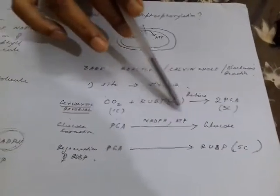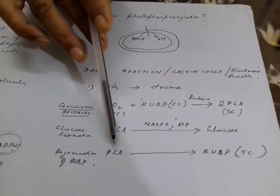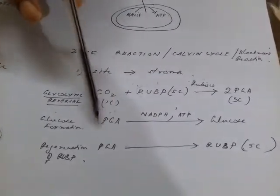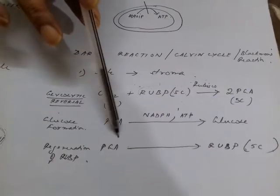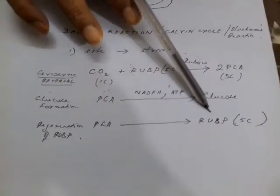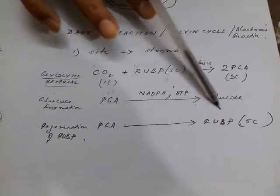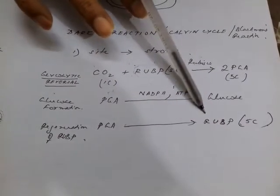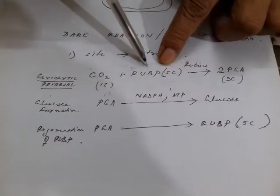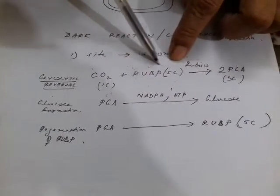In the process, RUBP is being used up, so there is a process by which RUBP is also regenerated. Some of the PGA is used for conversion back to RUBP — ribulose bisphosphate — because RUBP is required continuously in the reaction and would be depleted if not manufactured continuously.